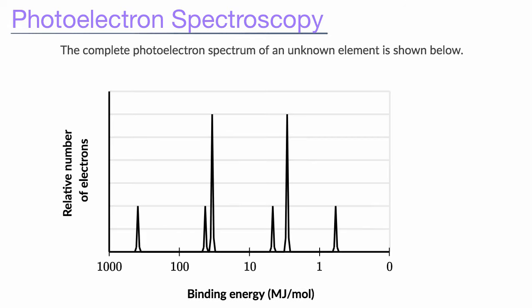In this video, we're going to introduce ourselves to the idea of photoelectron spectroscopy. It's a way of analyzing the electron configuration of a sample of a certain type of atom. And you might see something like this on an exam — a photoelectron spectrum that looks something like this.